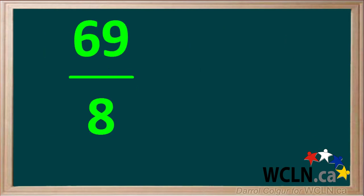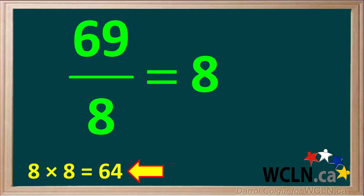69 over 8 is an improper fraction, so we need to make it into a mixed number to get the final answer. We need to find the largest number of times that 8 divides into 69. We'll try 8 and write it as a whole number here. 8 times 8 is equal to 64, which is just a bit under 69. 8 times 9 equals 72, which is larger than 69, so 9 is too big.